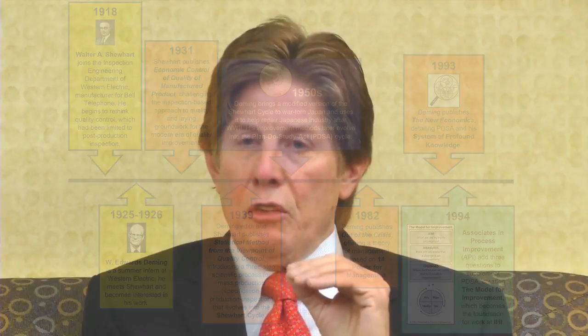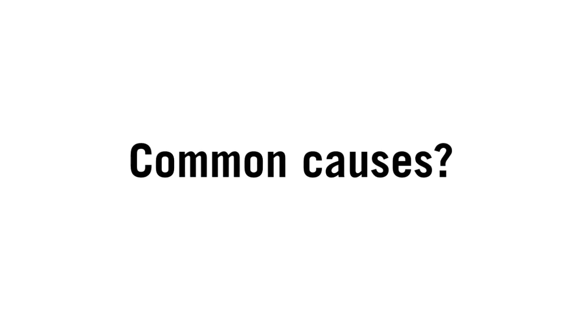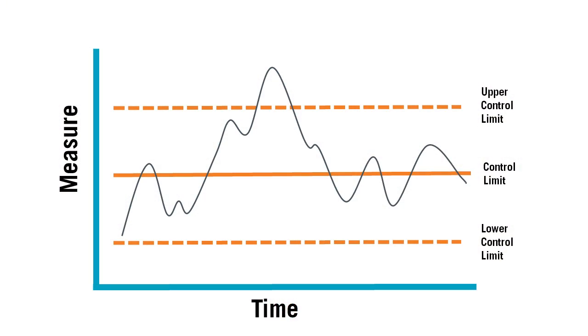Shewhart said that theory is going to be fundamental in how we make change to a system. The key is knowing whether we're going to make change by identifying and removing common causes — fundamental changes to the system — or whether we can solve a problem by the identification and removal of special causes. That became the cornerstone, and it created the method: the control chart, applicable to any situation.